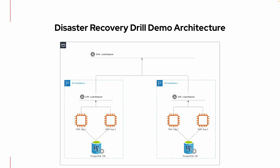The architectural demo we have is a straightforward active-passive setup. We have a global load balancer — in this case, HAProxy to simulate — and a local LTM, also an HAProxy. Then we have a web application with App1 and App2, and a Postgres database. If there are issues in the AP Southeast 1 region, which is Singapore, we will failover everything to the AP Southeast 2 region in Australia. All traffic and services will then be routed over to the secondary site in the event of a disaster or failure.